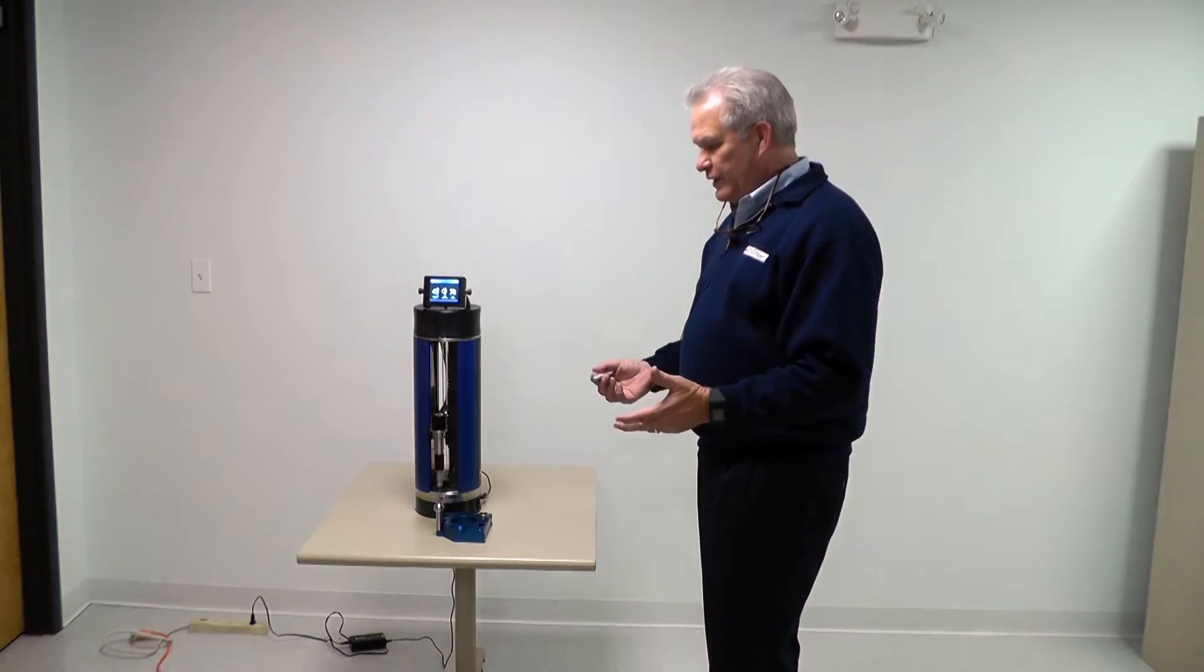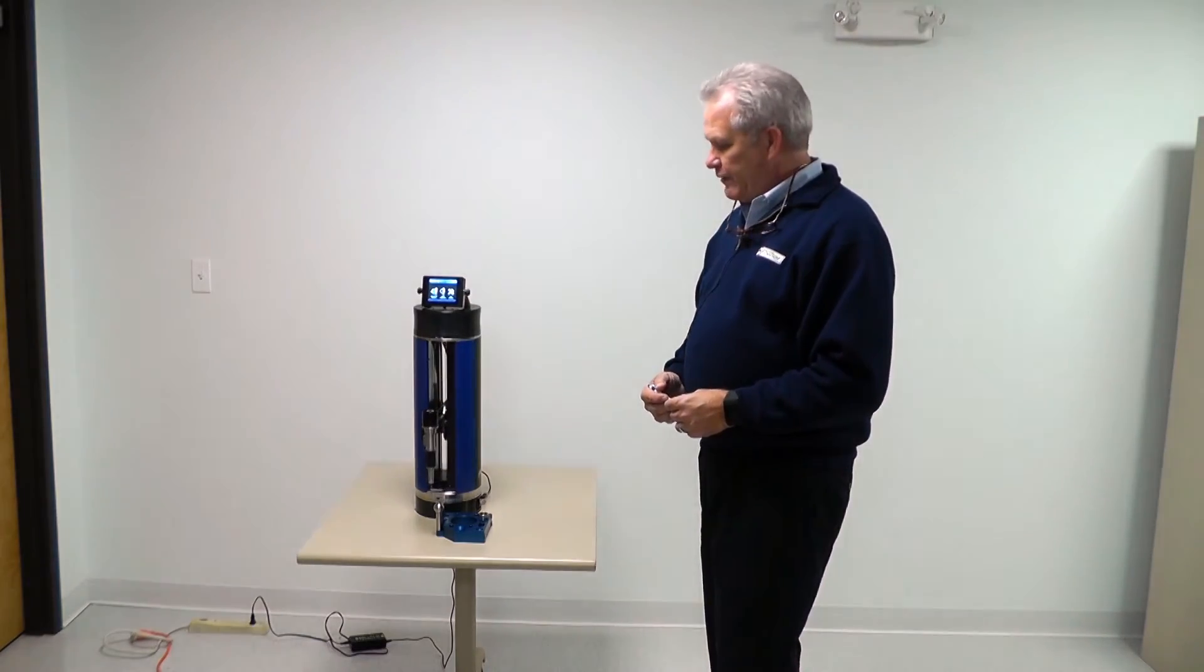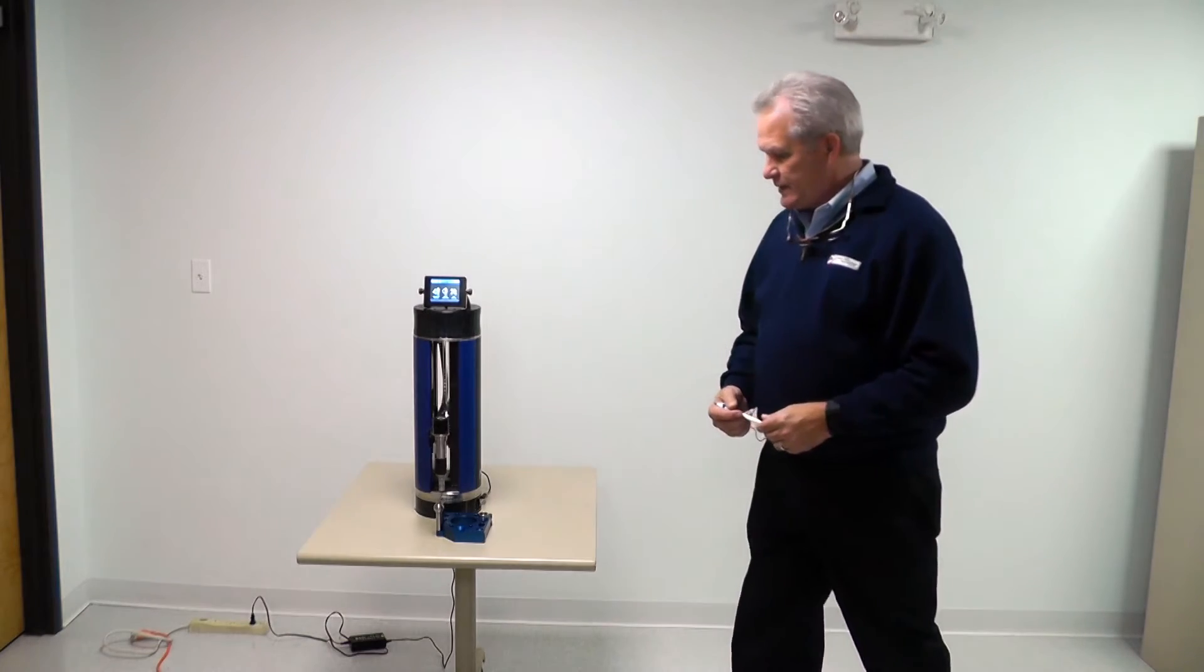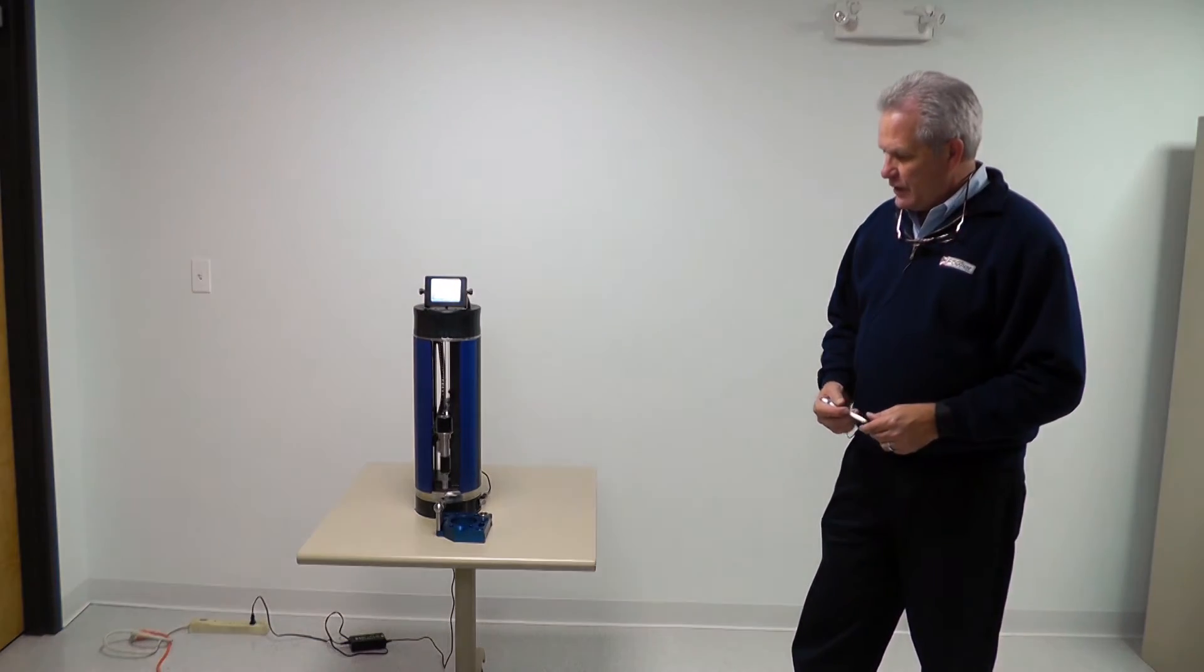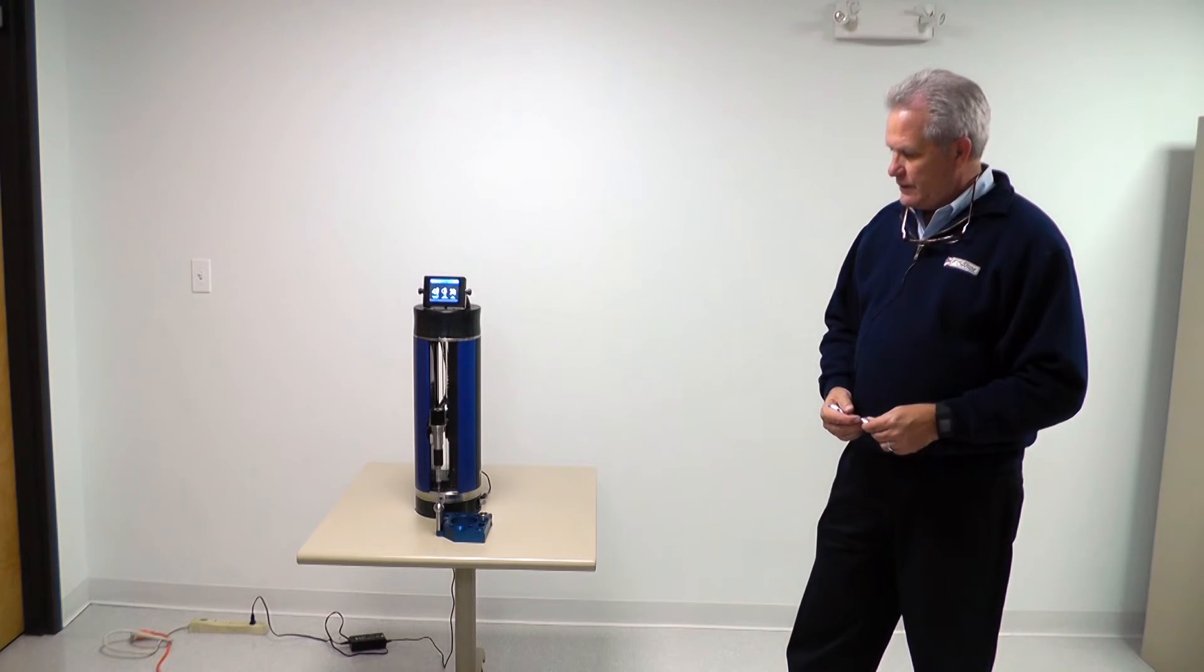This is a typical probe calibration that would happen on the ZCAT. I recommend doing it every morning. If you have a high temperature fluctuation in your work area, you might want to do it more often. It is a four-minute process, and it's on the master sphere, that one-inch sphere that comes with the ZCAT.